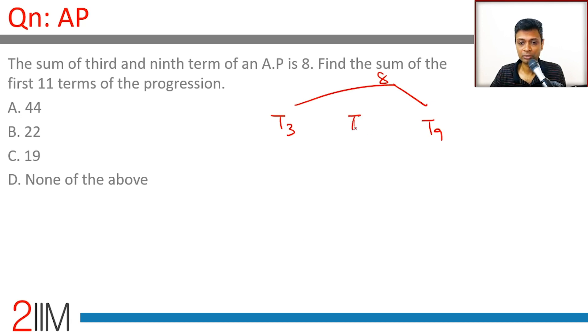The middle term here is T6. Now think about this: from T6 you add common difference thrice, you go here. You subtract common difference thrice, you go here.